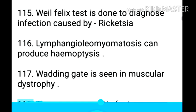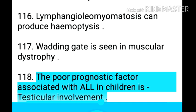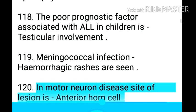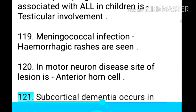Point 117: Lymphangioleiomyomatosis can produce hemoptysis. Point 118: Waddling gait is seen in muscular dystrophy. Point 119: The poor prognostic factor associated with ALL in children is testicular involvement. Point 120: In meningococcal infection, hemorrhagic rashes are seen. Point 121: In motor neuron disease, site of lesion is the anterior horn cell.